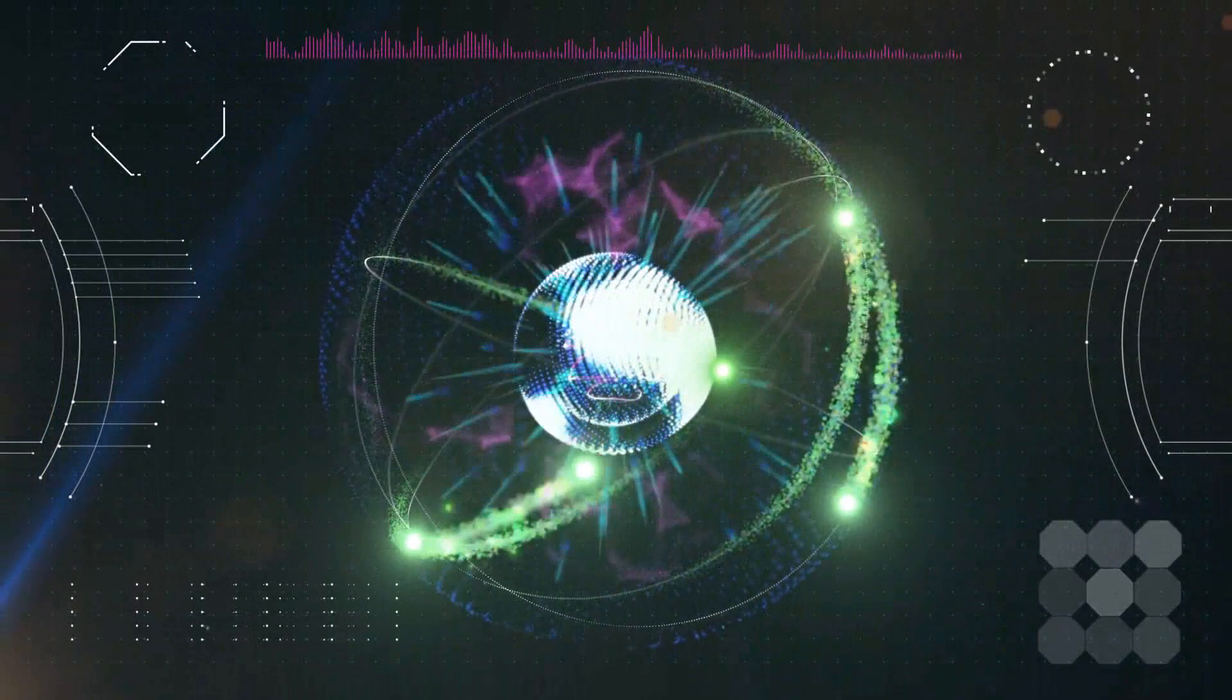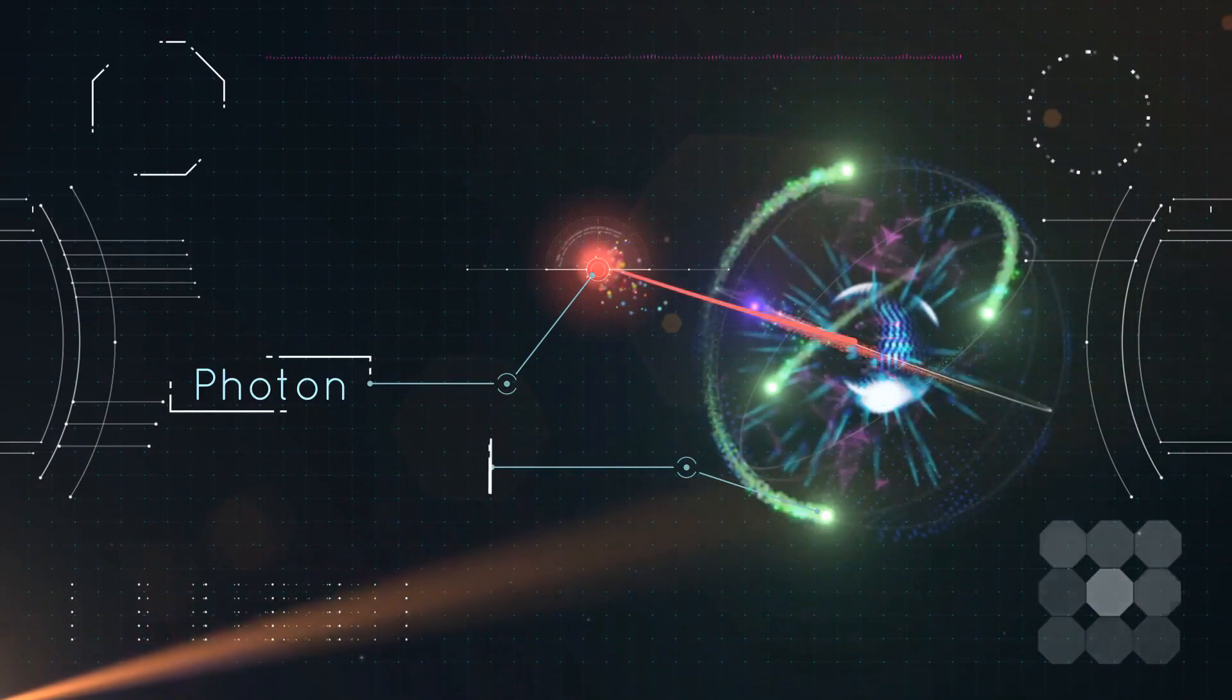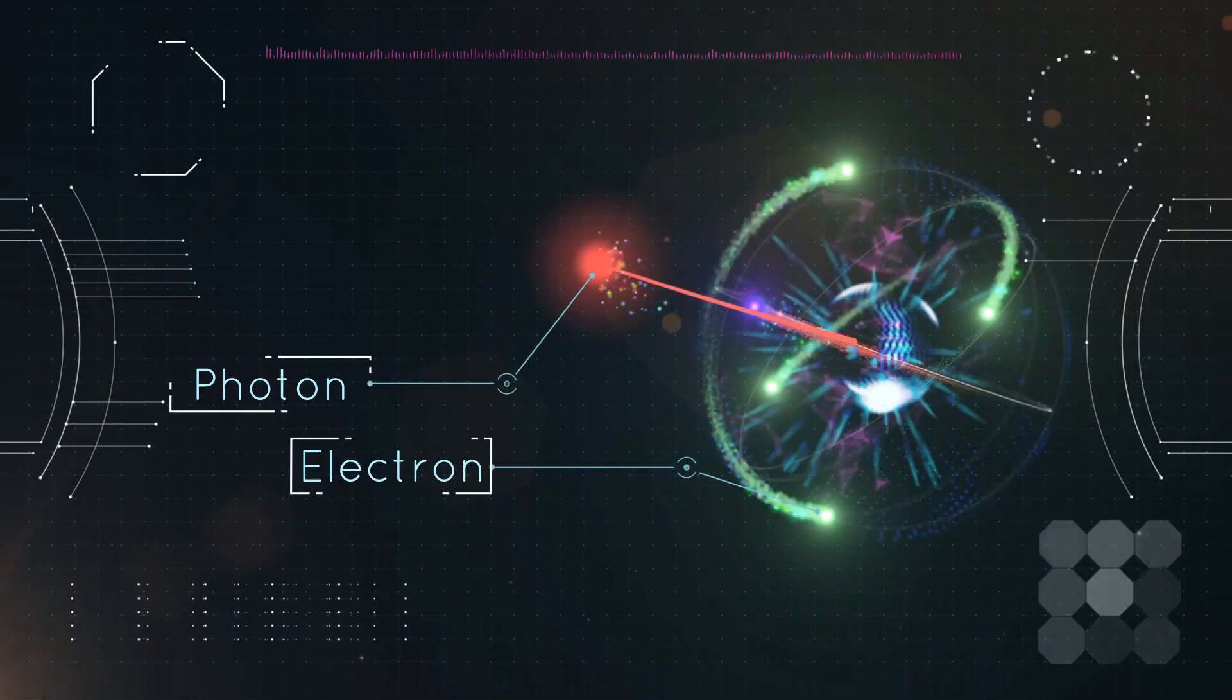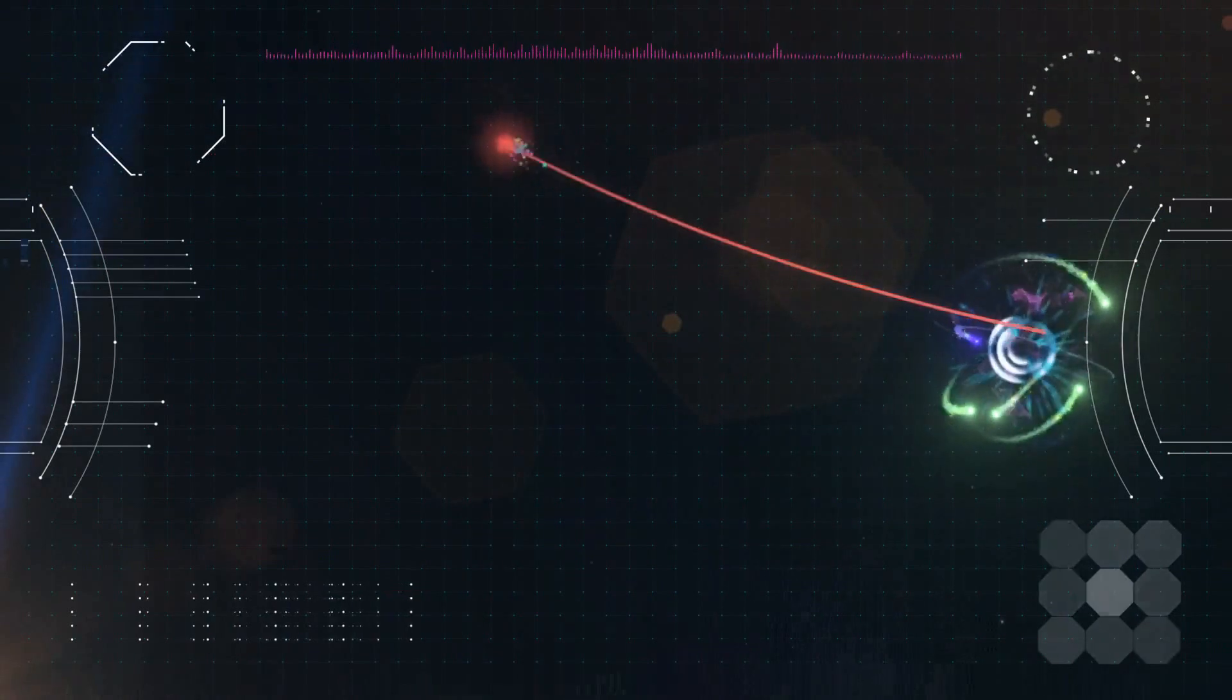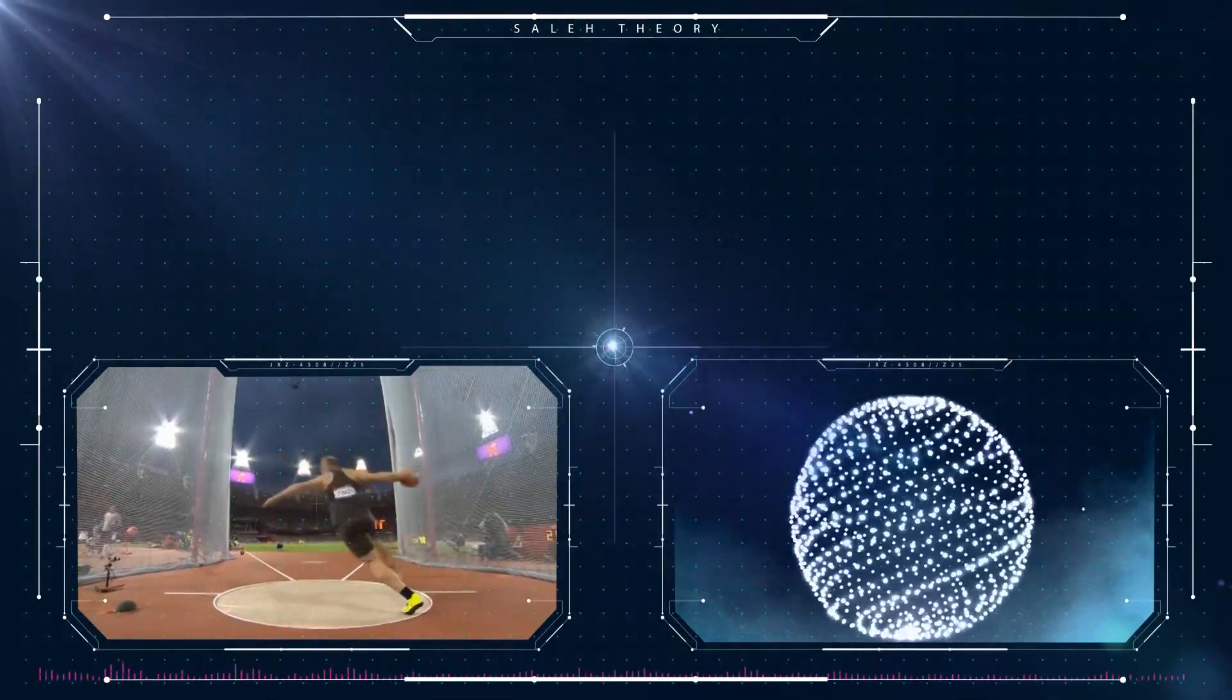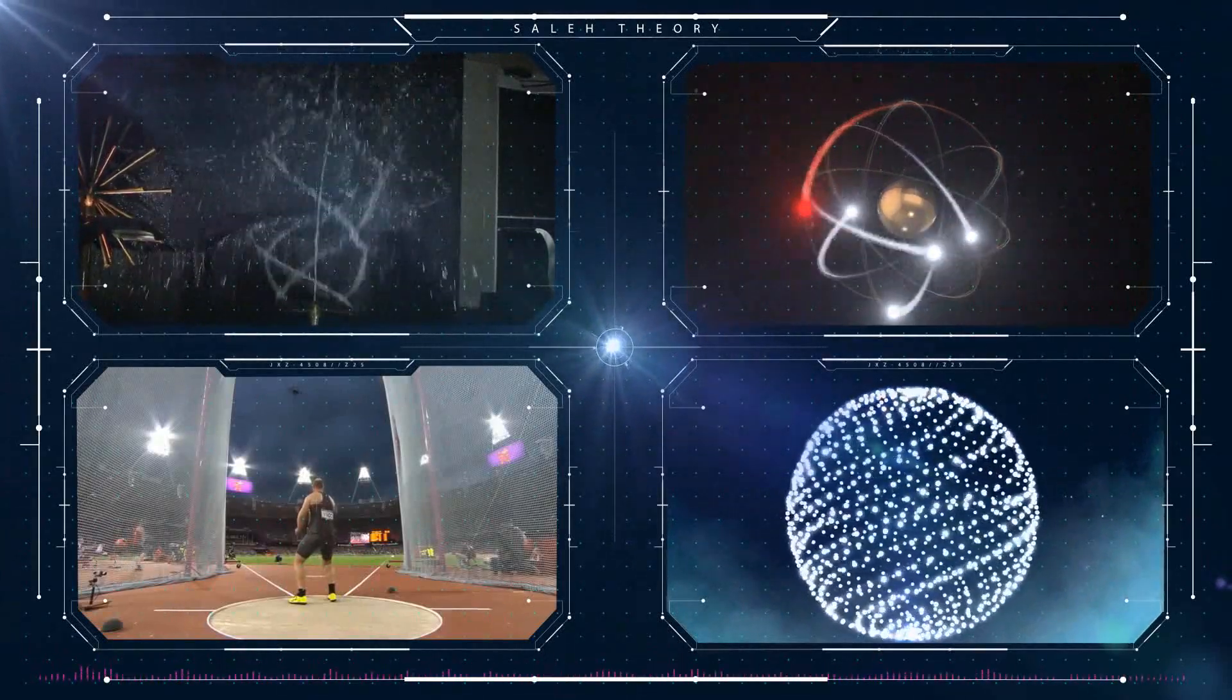When the electron is excited, it emits a photon. The motion of the photon is affected by the motion of its source, the electron, and must include both types of motion of its source. In other words, since the electron is the photon generator and the electron is rotating around itself and around the nucleus, the emitted photon also has these rotating motions.